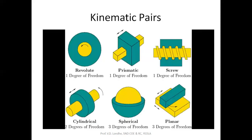These are the kinematic pairs. The first kinematic pair is the revolute pair. The second is the prismatic or sliding pair. Third is the screw pair, seen in a nut and bolt system. Then the cylindrical pair, also called a rolling pair. The revolute pair is also called a turning pair. Then the spherical pair, also called a globular pair. And finally the planar pair. In the next slide we will see the animation of the kinematic pairs.